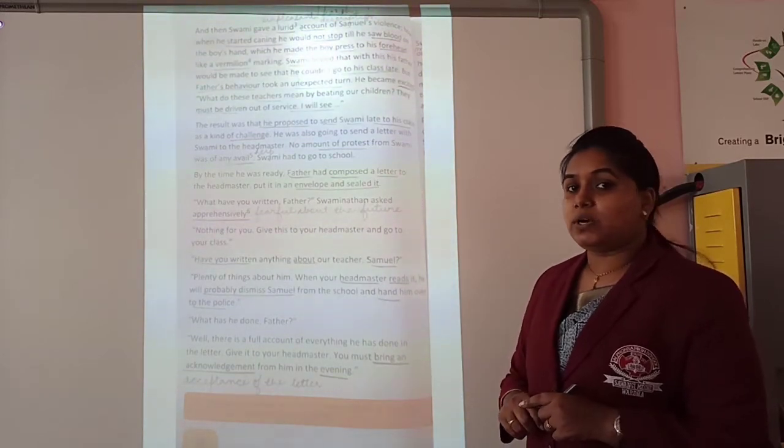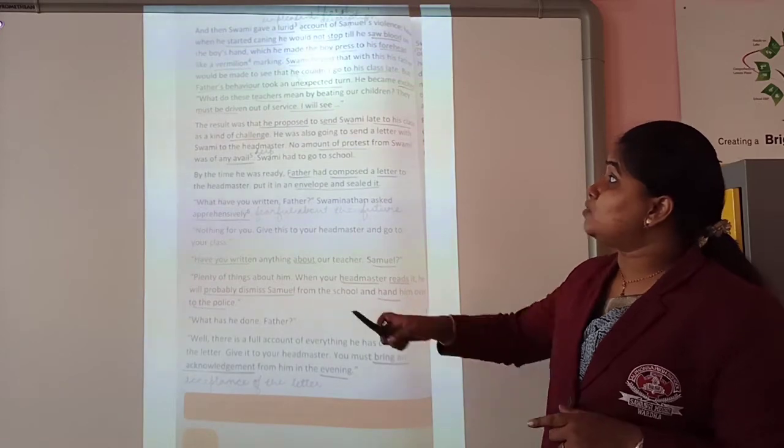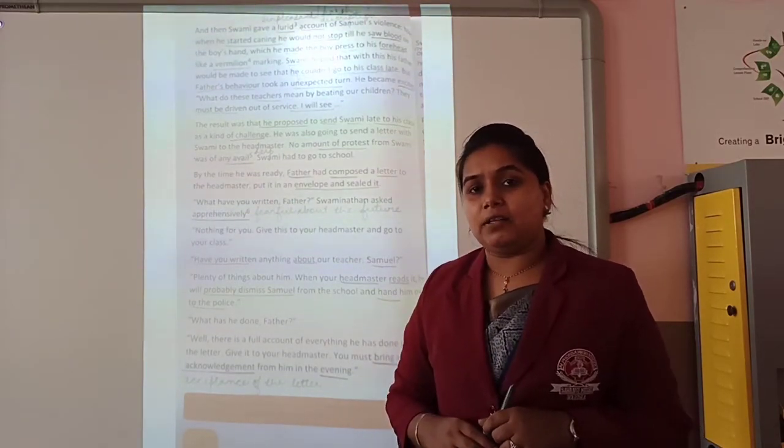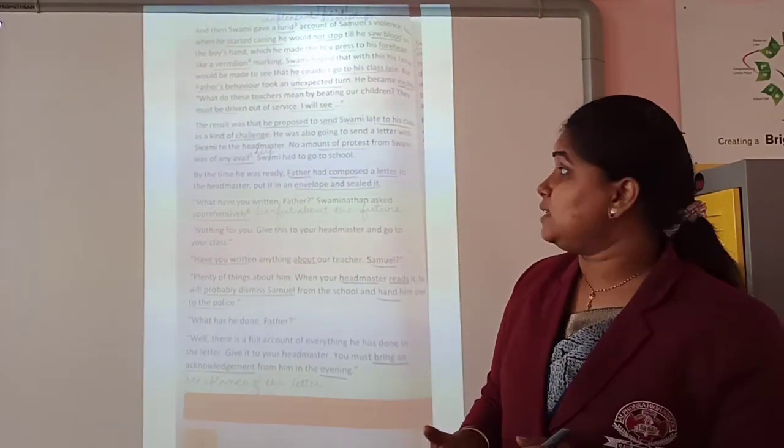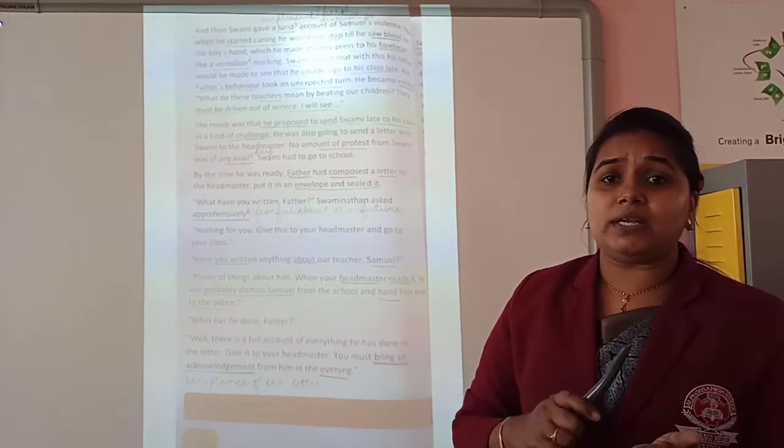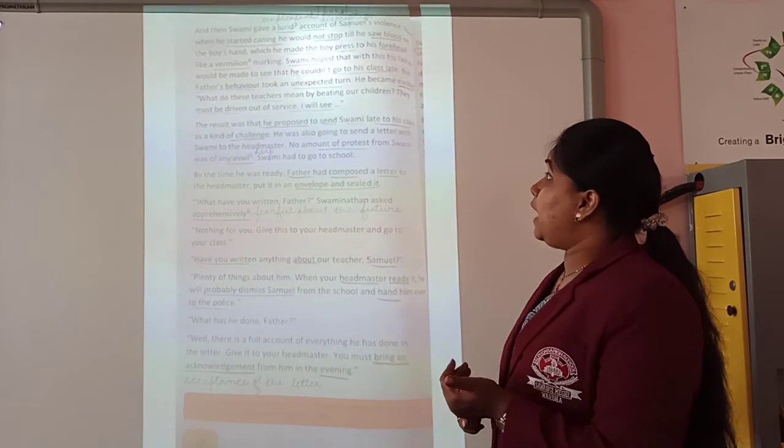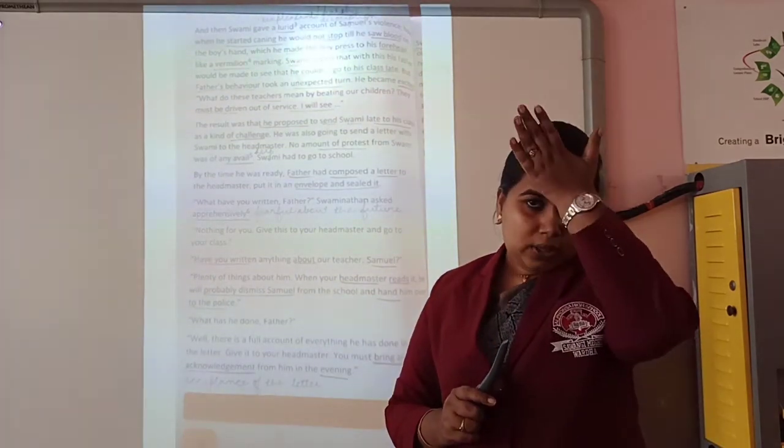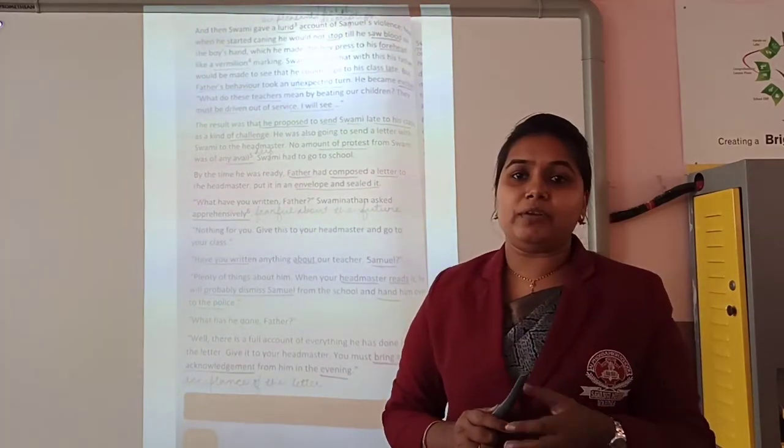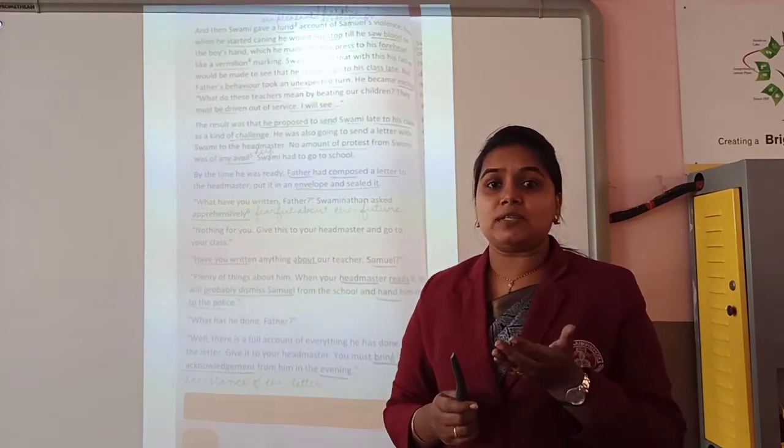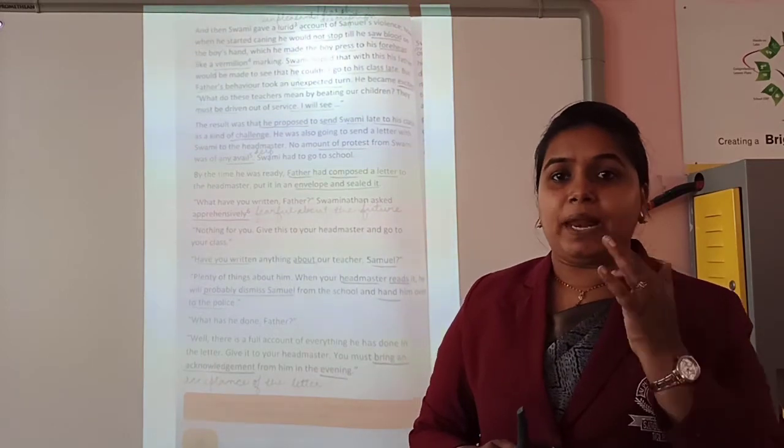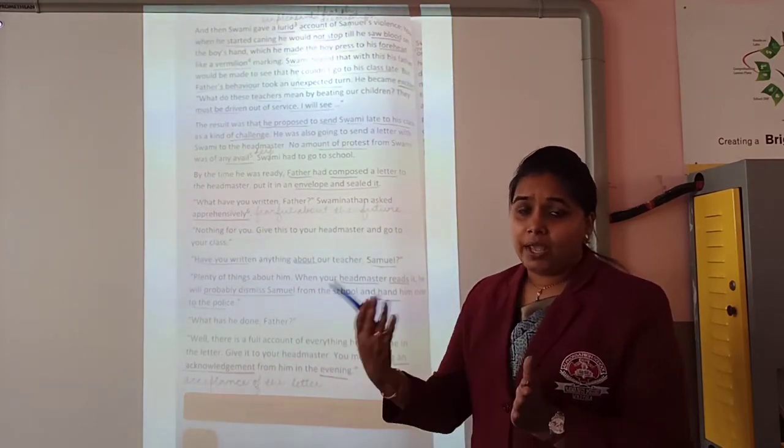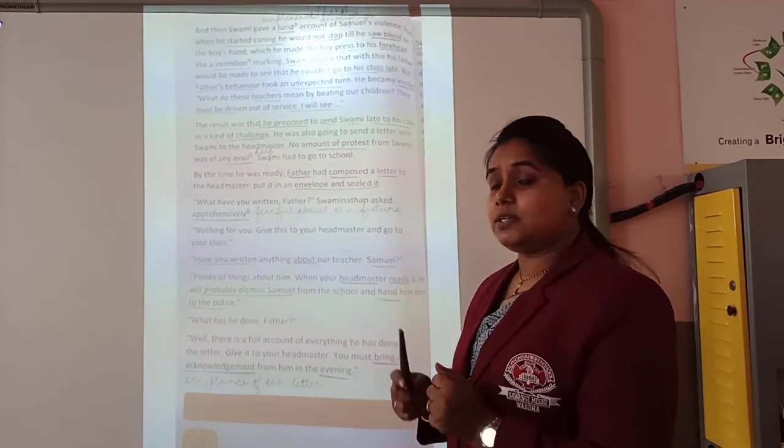Let's read the third page. Swami gave a lurid account of Samuel. Lurid here means unpleasant, not very good - giving a bad impression of his teacher in front of his father, that he is very dangerous. He says Samuel starts screaming and will not stop until he sees blood on the hands of the children. After caning and getting blood out from the hand, he makes them press it on their forehead like vermilion, or sometimes he will ask the boys to smear the blood on their face. Such is the impression, the explanation that he is presenting in front of his father about his teacher Samuel.